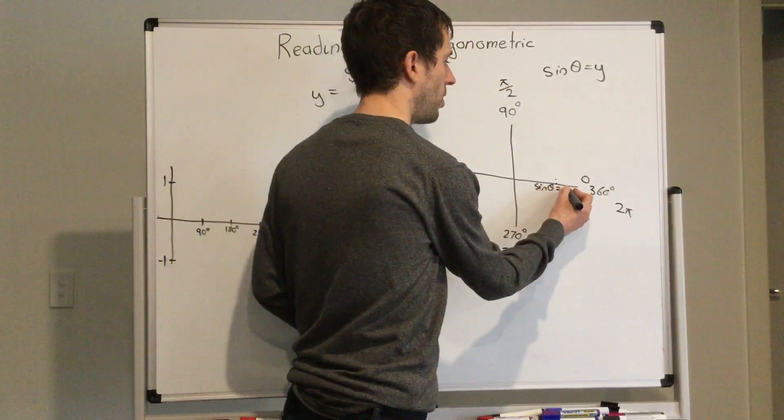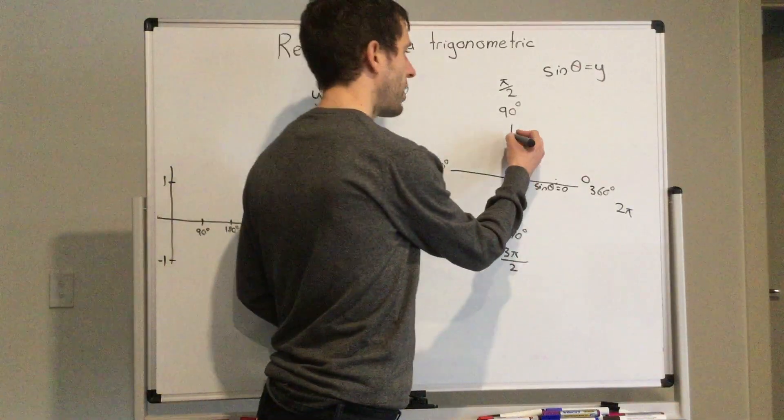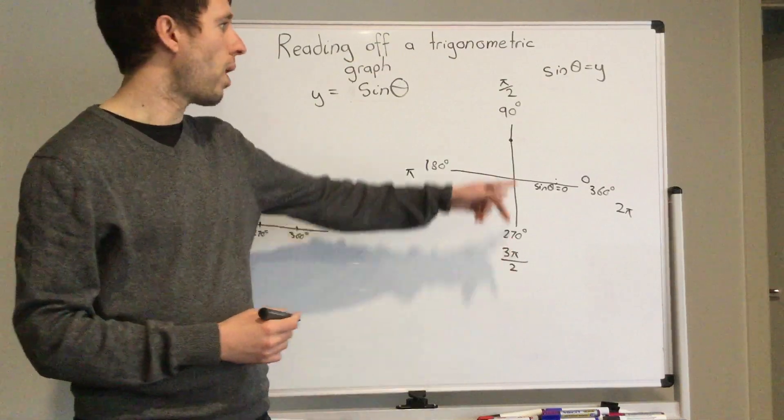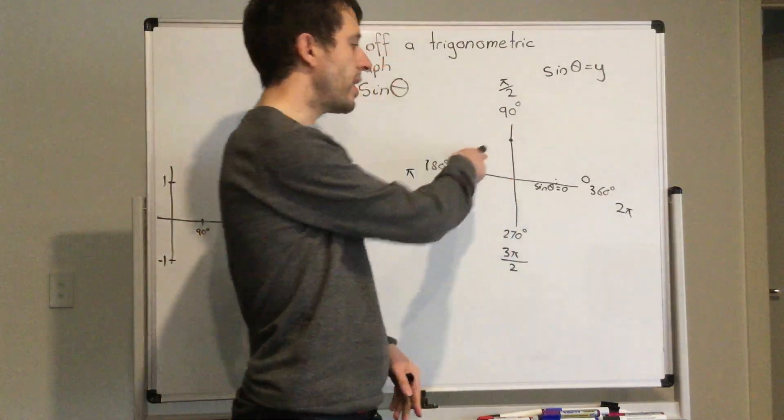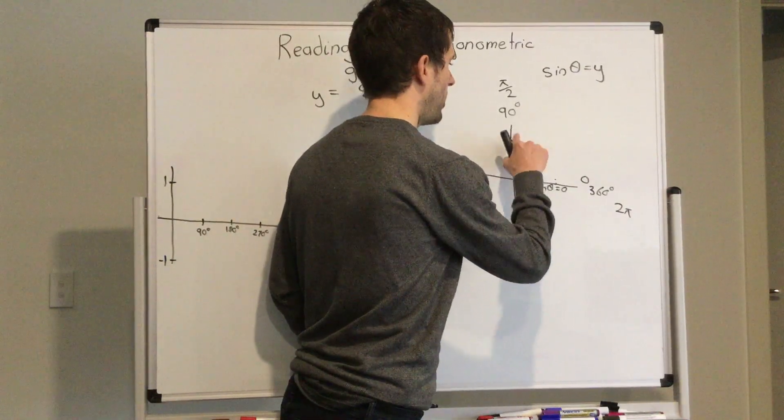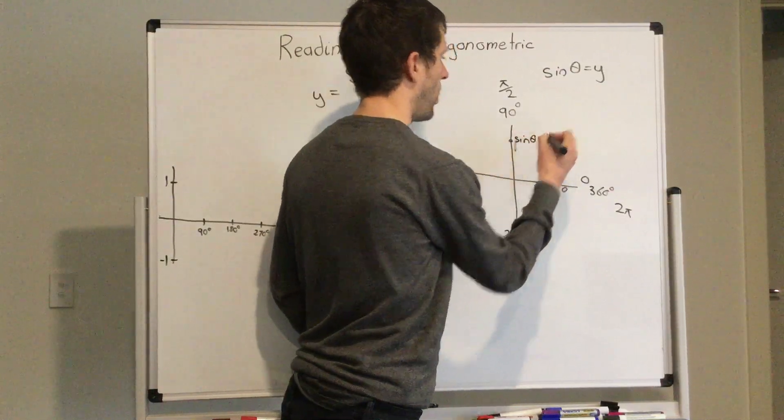At zero, we know that our sine alpha is zero. When our graph gets to 90 degrees, our y is going to be at one because it's a radius of one, so sine here will equal one.